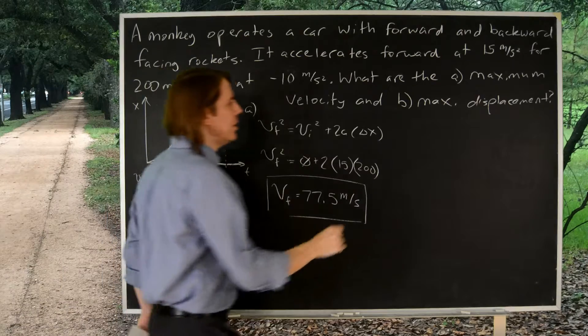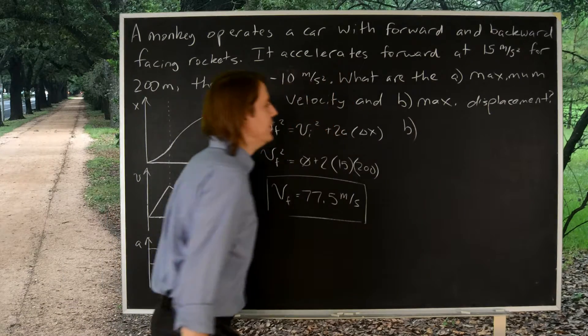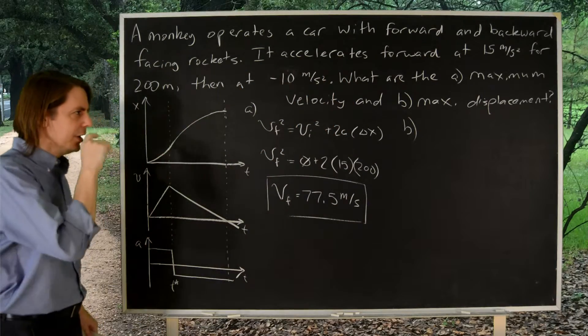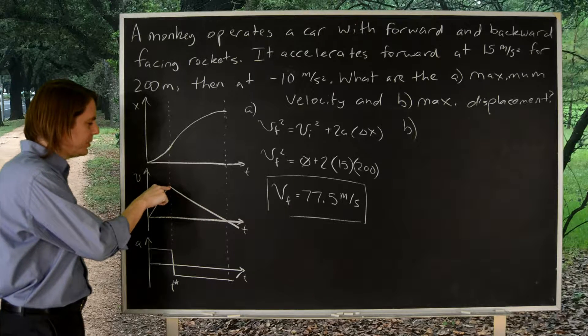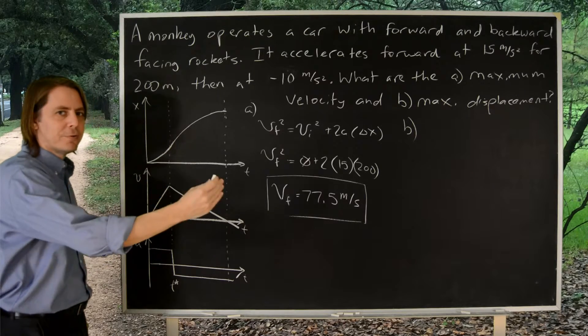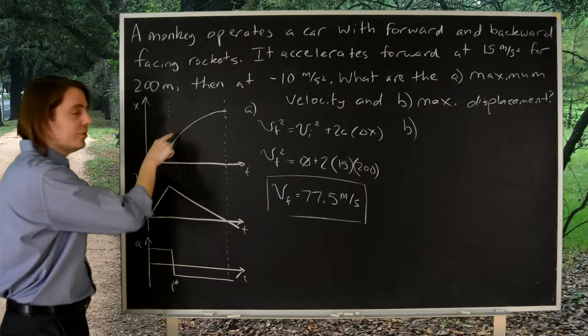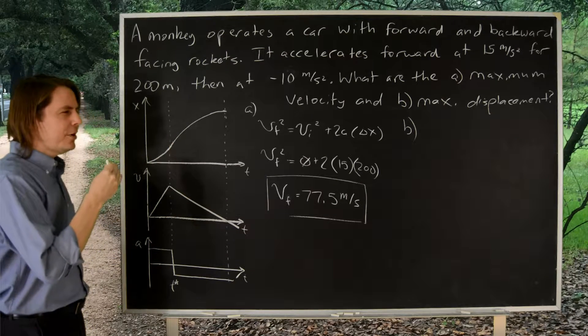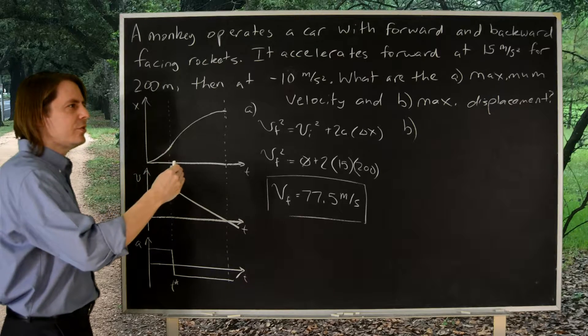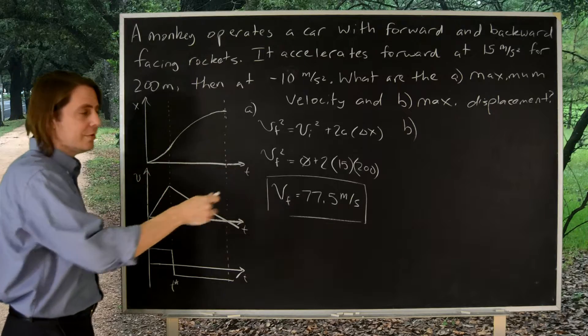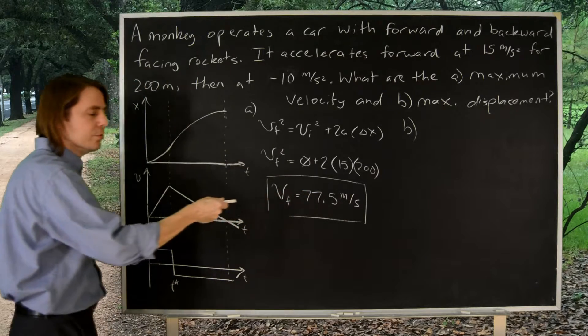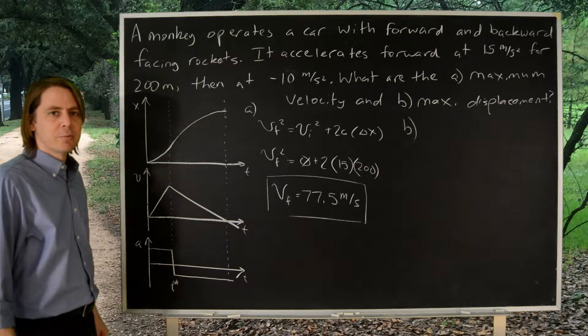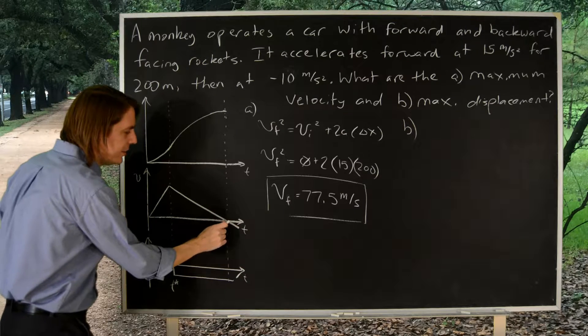Now for part B, what was the maximum displacement? That did not occur here. Keep in mind, even after this point, once you started to decelerate, you're still moving forward. You still have a positive velocity. So displacement is still increasing. The displacement will stop increasing as soon as the velocity reaches zero. We're moving forward, moving forward, slowing down. It's when the velocity goes through zero that the displacement hits a maximum. And we know that is here.